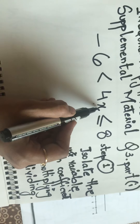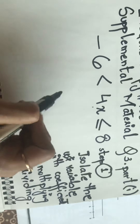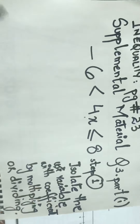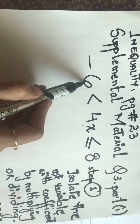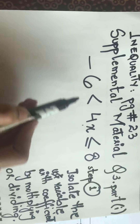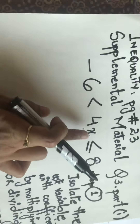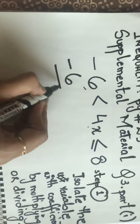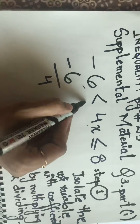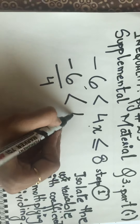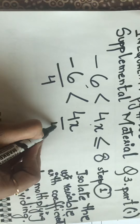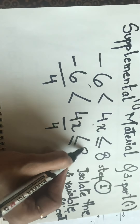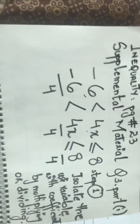We isolate X by multiplying or dividing. The coefficient multiplied with X is four, so we divide four into each of the three parts of the inequality. That gives us: minus six divided by four, then the sign, four X divided by four, then the lesser than or equals to sign, and eight divided by four.